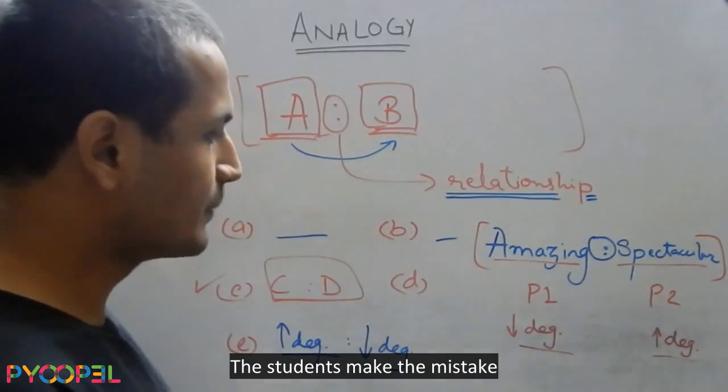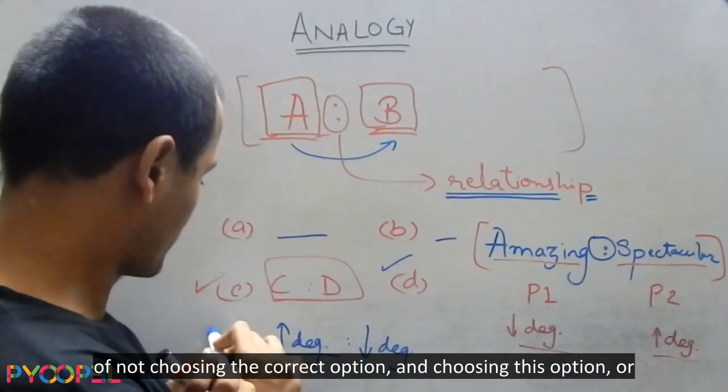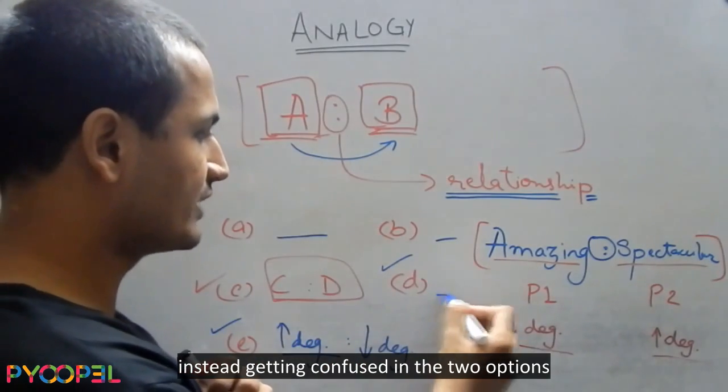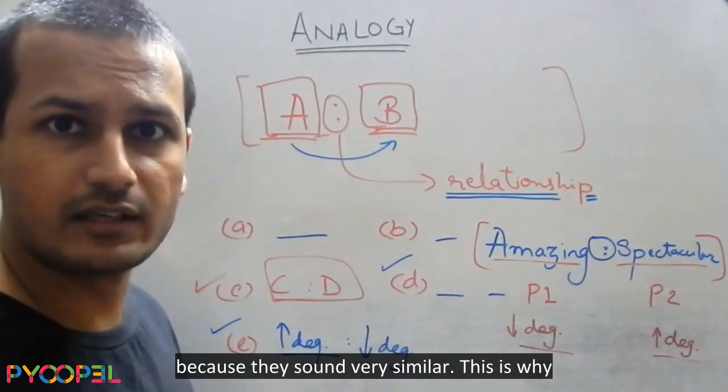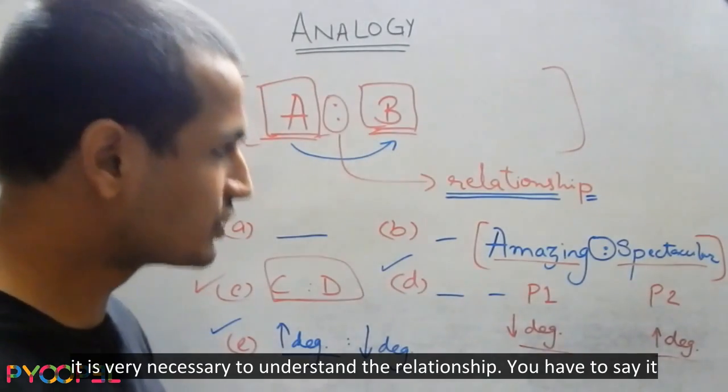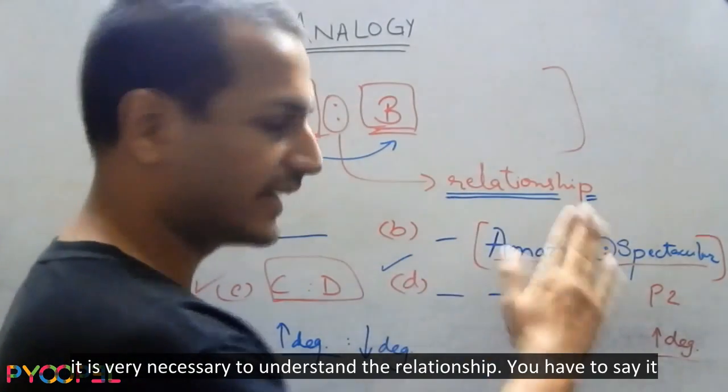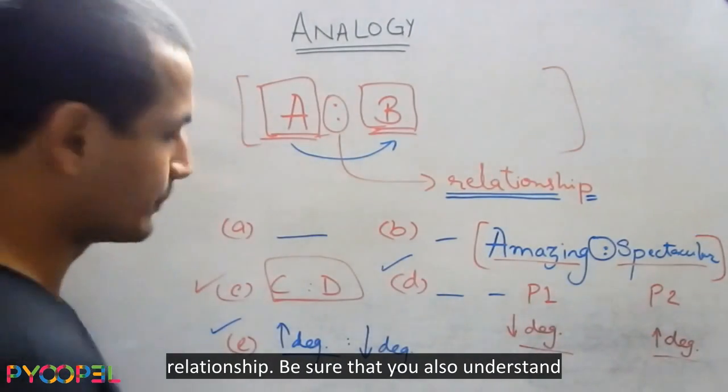Now, students make the mistake of not choosing the correct option and choosing this option or instead getting confused in the two options because they sound very similar. This is why it is very necessary to understand the relationship. You have to say it loud to yourself in your mind, what is the exact relationship.